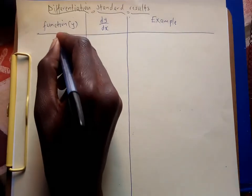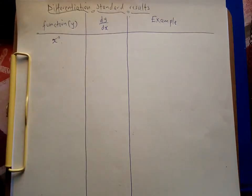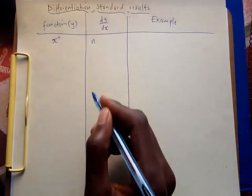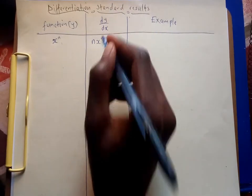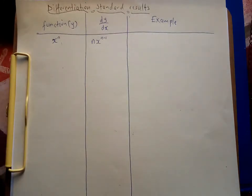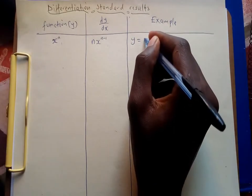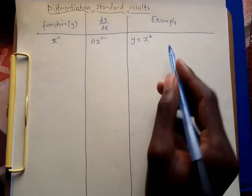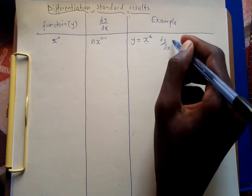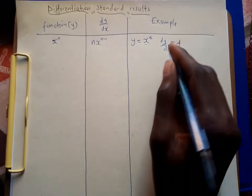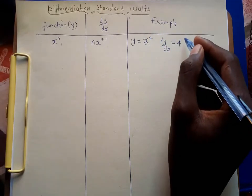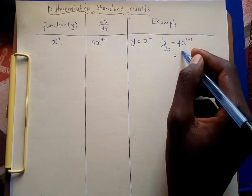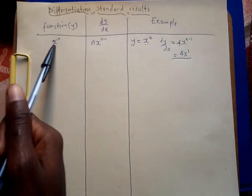For example, if you are given a function like x^n, its derivative is found by bringing the power in front, multiplying it, and reducing the power by 1, giving n·x^(n-1). For example, if you have y = x^4, then dy/dx: the 4 comes in front and the power reduces by 1, giving 4x^3. That is what the power rule stands for.